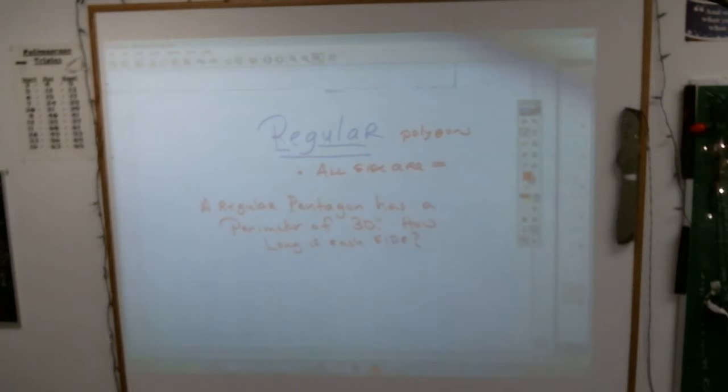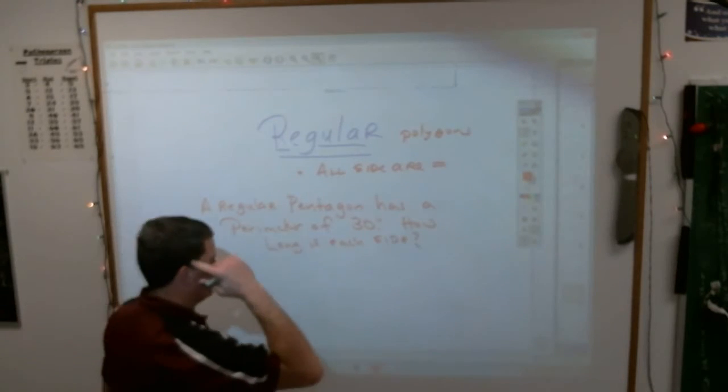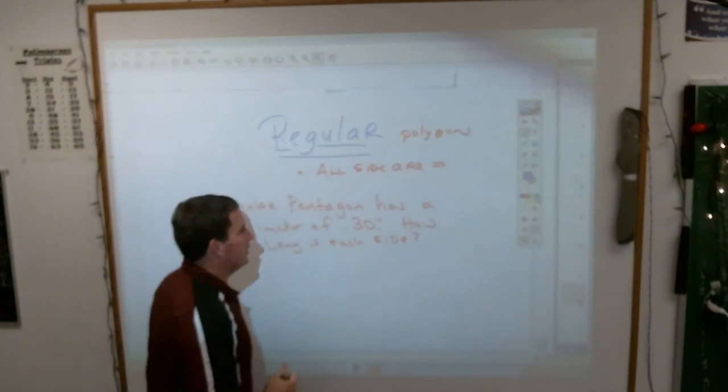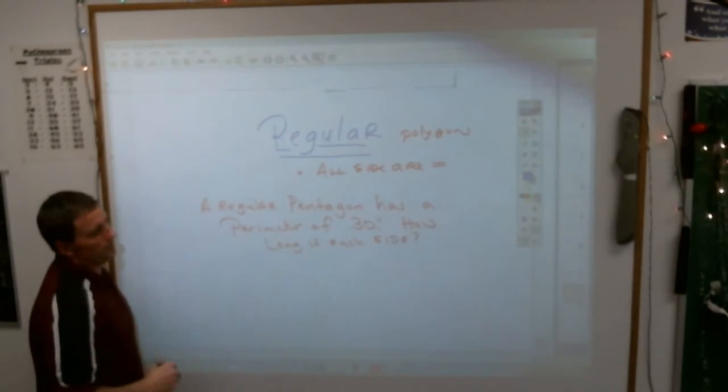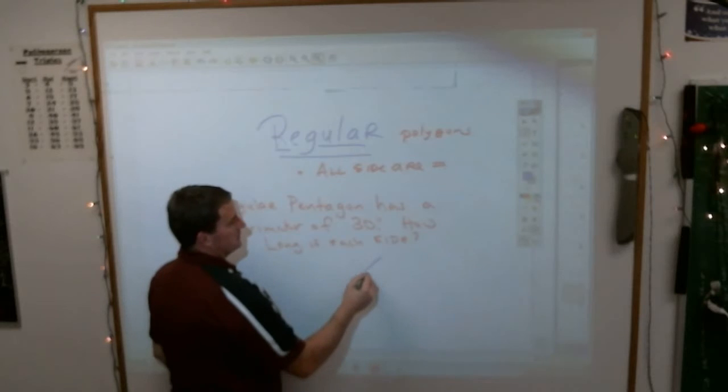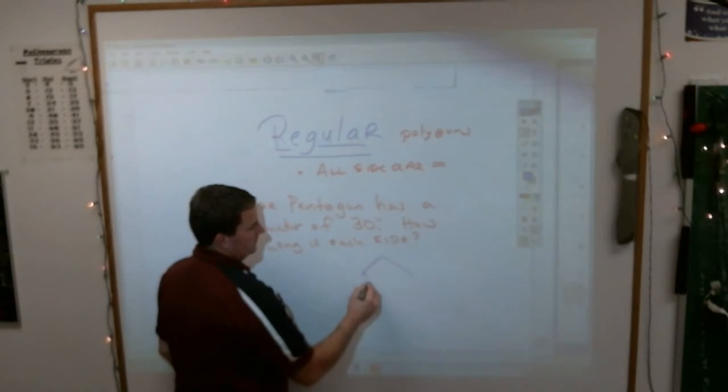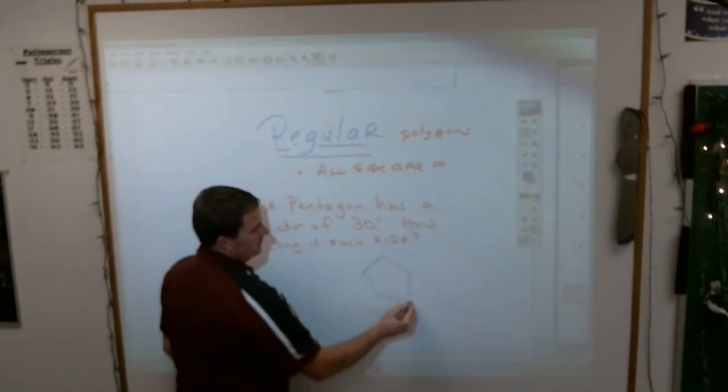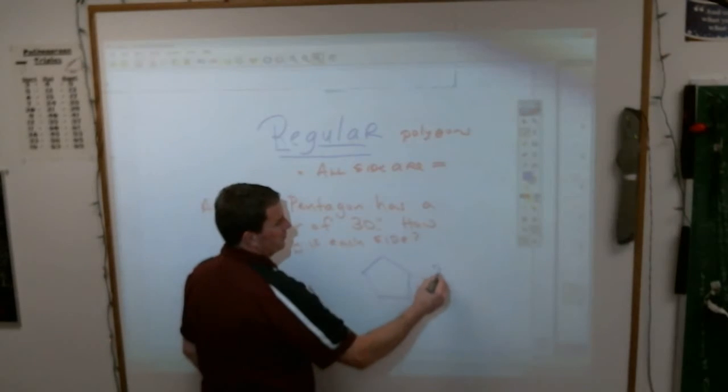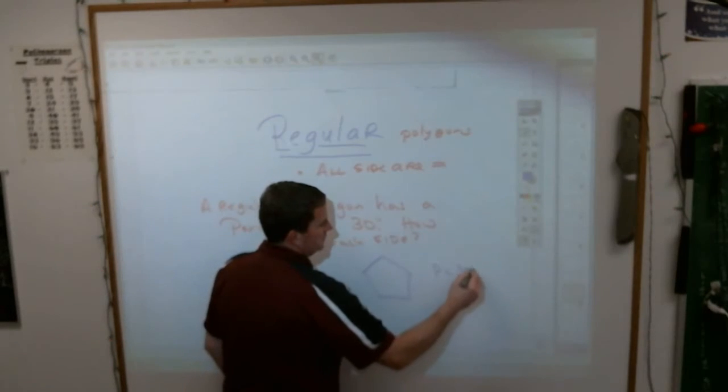Well, the first thing, obviously, we're going to do, Bryce, is you will take and draw, as best you can, a regular pentagon, which means it looks a little like this. And obviously we're all a little drawing challenged. And then you'll write down next to it that the perimeter equals 30 inches.